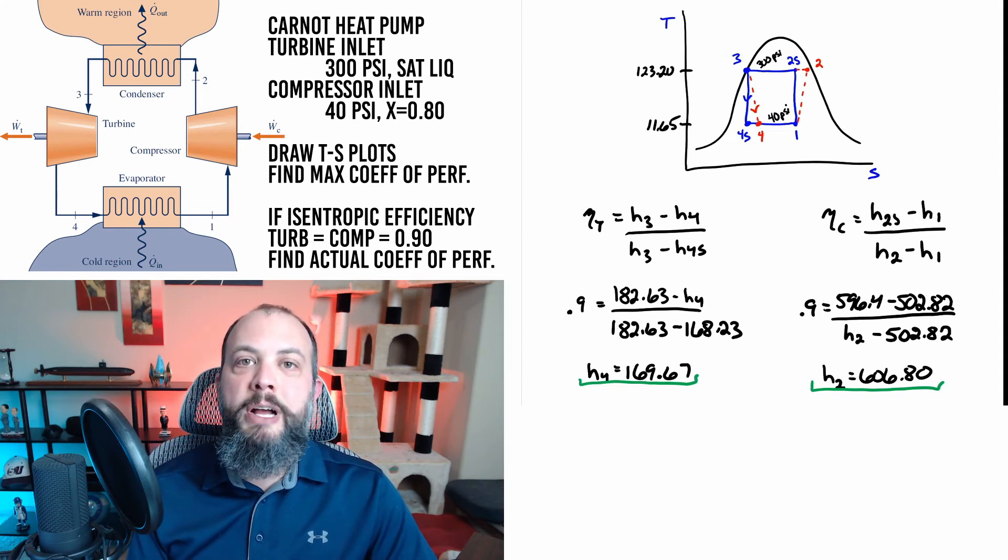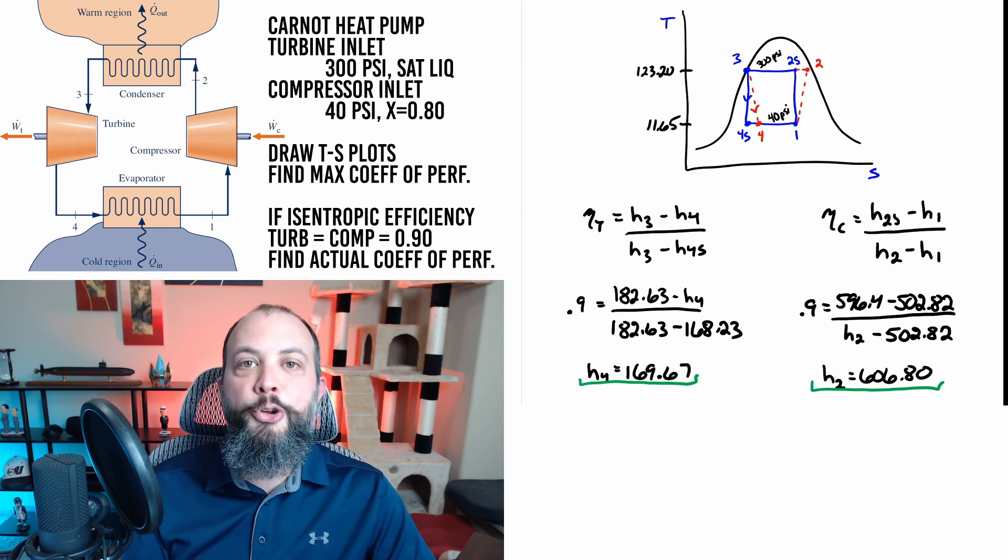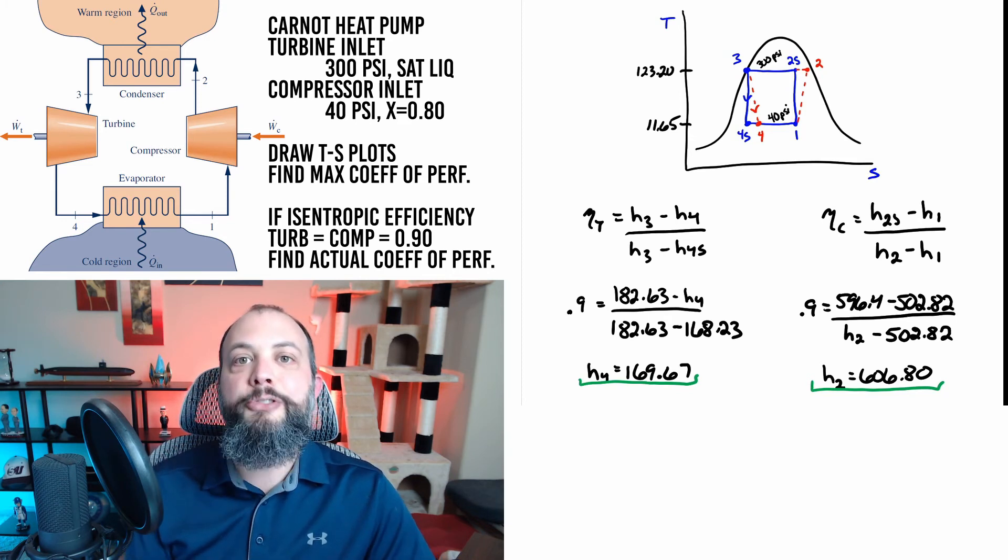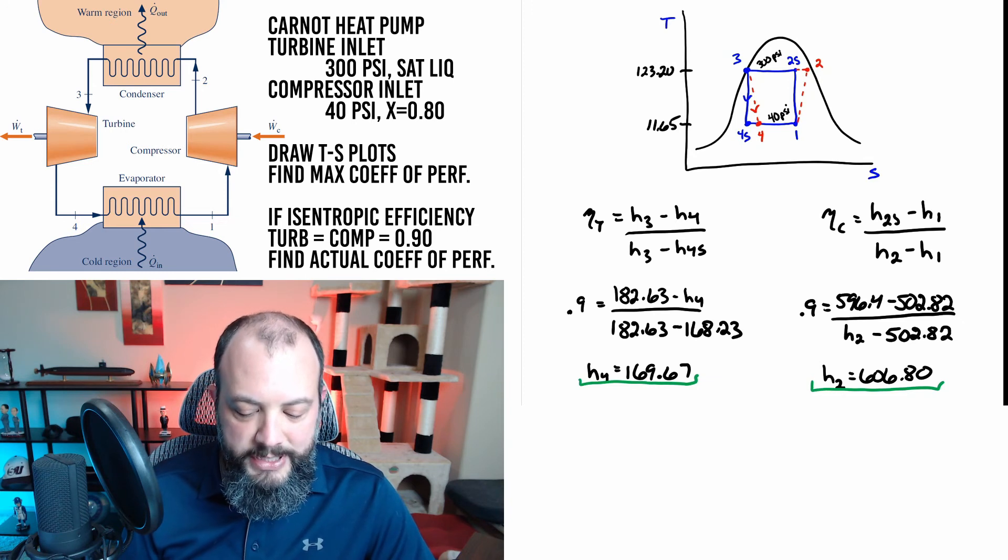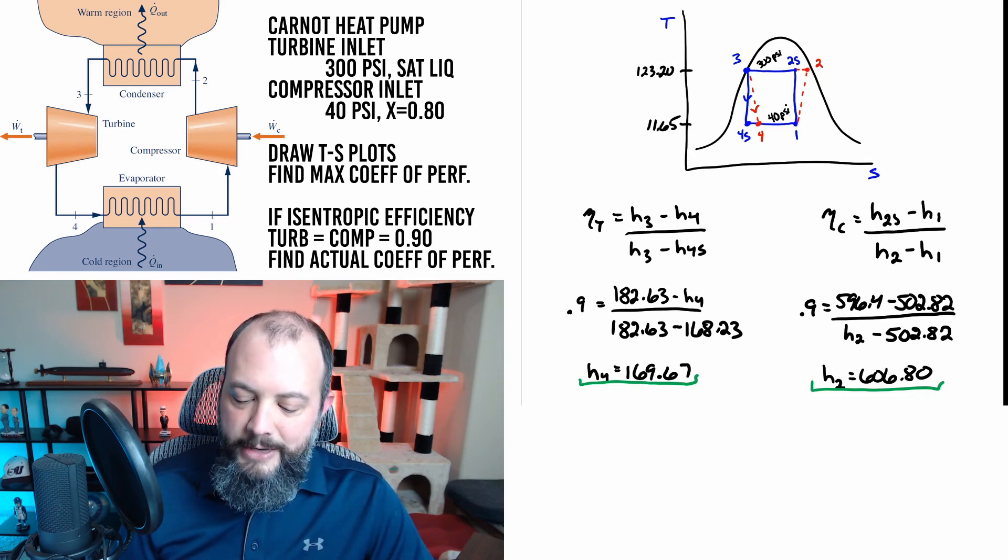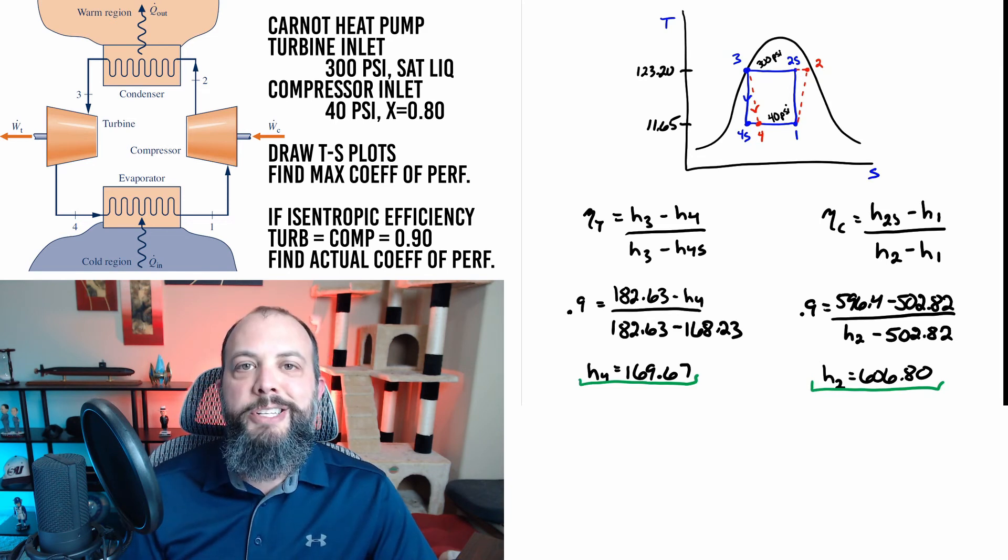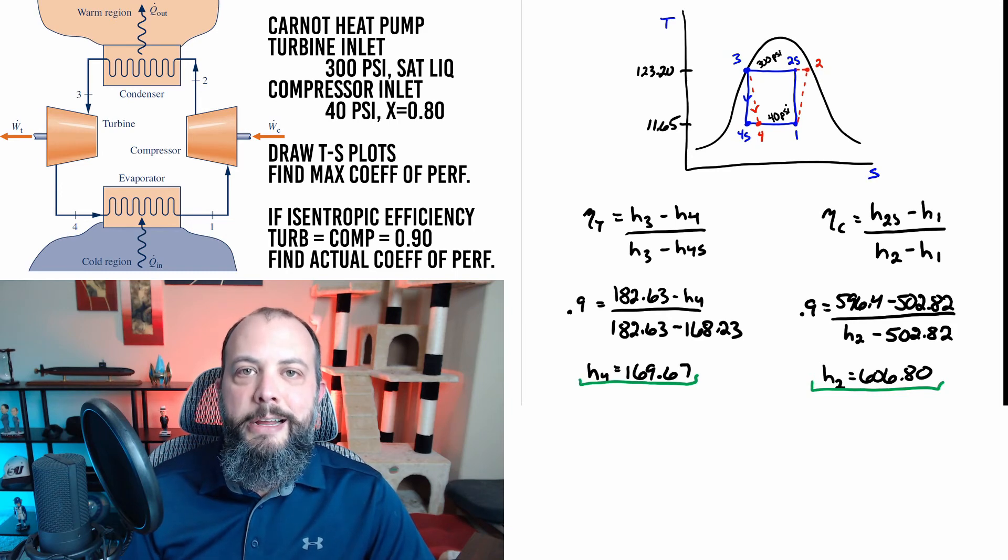Every real world process with irreversibilities is going to lead to an increase in entropy. So these red dashed lines will always go to the right no matter whether they're slanting up into the right or down into the right they will always slant to the right. And so it's good to double check that h4 of 169.67 is greater than h4s 168.23 and h2 606.8 is greater than h2s 596.4 which means that these numbers do make sense and that we didn't make any obvious sign errors.